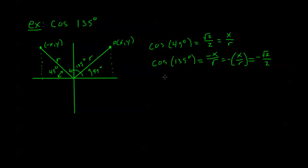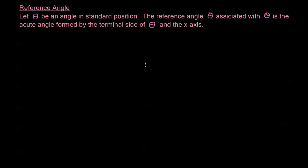What we're doing here is using what's called the reference angle — just like reference numbers. The reference angle is the shortest angular distance, or the acute angle formed between the terminal side of my angle and the X axis, whichever is closer. Let theta be an angle in standard position. The reference angle theta-bar associated with theta is the acute angle formed by the terminal side of theta and the X axis.